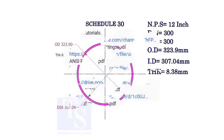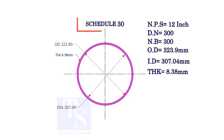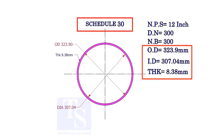Let us study the terms of a 12 inch pipe. The DN and NB sizes are the same. This is a schedule 30 pipe. Read the OD, ID, and thickness from the chart.